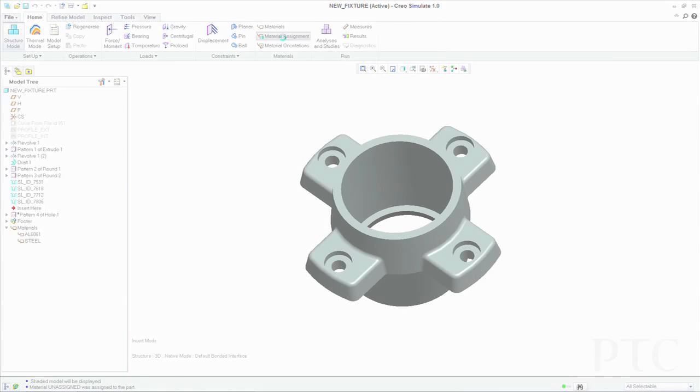Creo Simulate is our dedicated structural, thermal, and vibration analysis solution built on the Creo product family. What we've done with Creo Simulate is take all the best capabilities that used to be locked within the parametric modeling application and split them out into a standalone analysis tool.